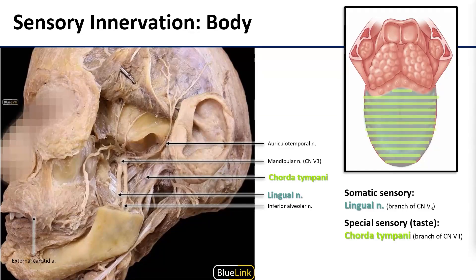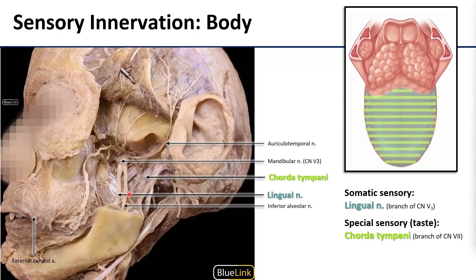As the lingual nerve runs through here, it picks up a hitchhiker. Chorda tympani is a branch of the facial nerve that passes through the middle ear, exits the cranium through the petrotympanic fissure, and into the infratemporal fossa. It carries preganglionic parasympathetics for the lingual, sublingual, and submandibular glands. More germane to our purposes, it carries special taste sensory fibers from the anterior two-thirds of the tongue, joining up with the lingual nerve and traveling with it into the oral cavity.